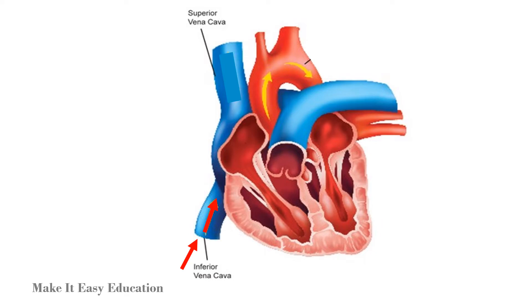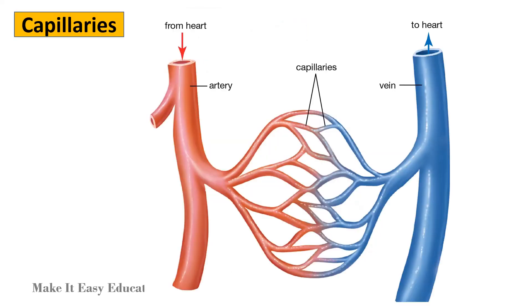The inferior vena cava is responsible for bringing blood from the lower portion of the body to the heart. Capillaries are the thinnest of the three blood vessels, and they connect the arteries to the veins.